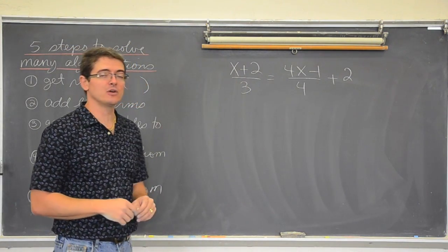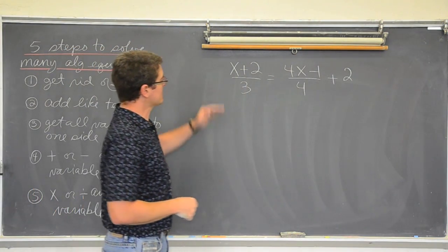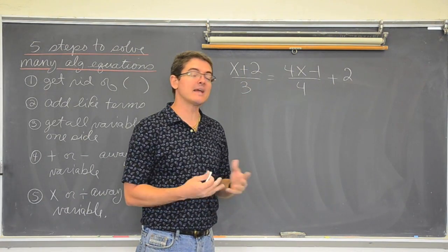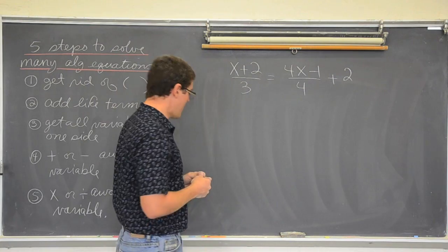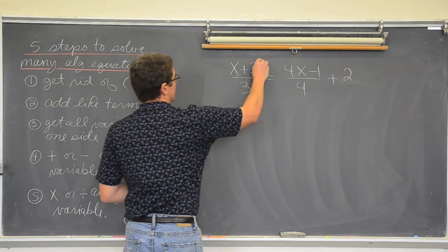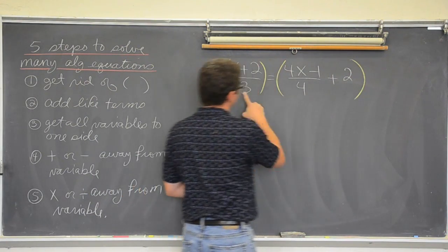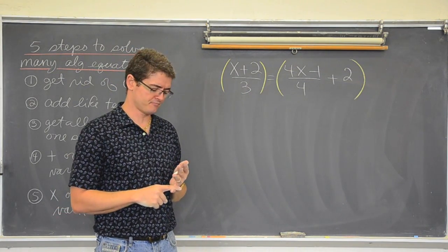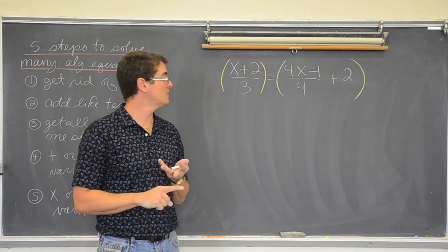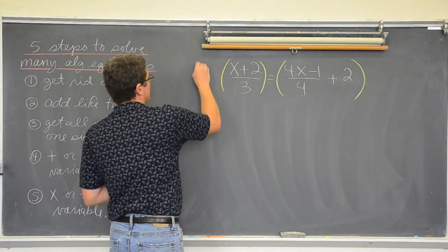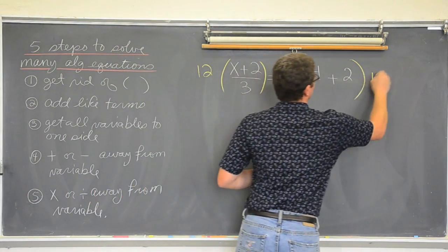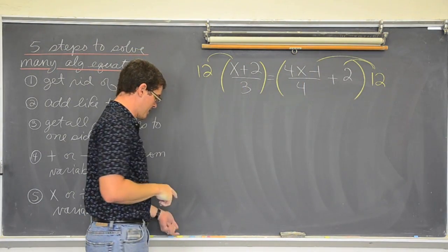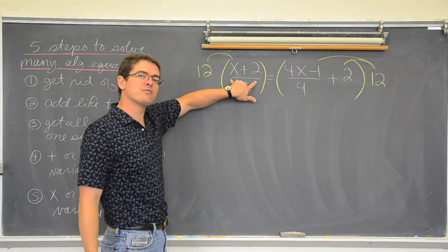That looks a lot more complicated than the previous question I just had up here. Well, I can still look at these fraction bars like division because, well, they are. And I can still, like my last example, multiply both sides of my equation by something that will cancel both of those numbers out. So, what number does three and four both go into? Four, eight, twelve. Okay. So let's multiply the entire thing through by twelve and see what happens. Now this is a little bit more complicated than the other one.